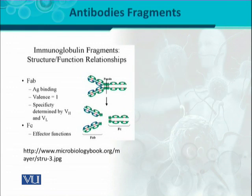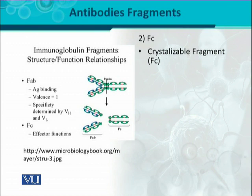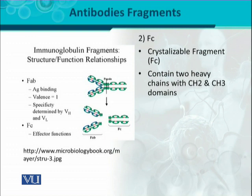The second important fragment is FC. FC stands for 'crystallizable' — when papain acts on the immunoglobulin structure, the fragment that is cleaved is easily crystallizable, which is why it is called the FC region. The FC fragment contains only heavy chains with two domains: CH2 and CH3, along with part of the hinge region. There is no light chain present in this fragment.